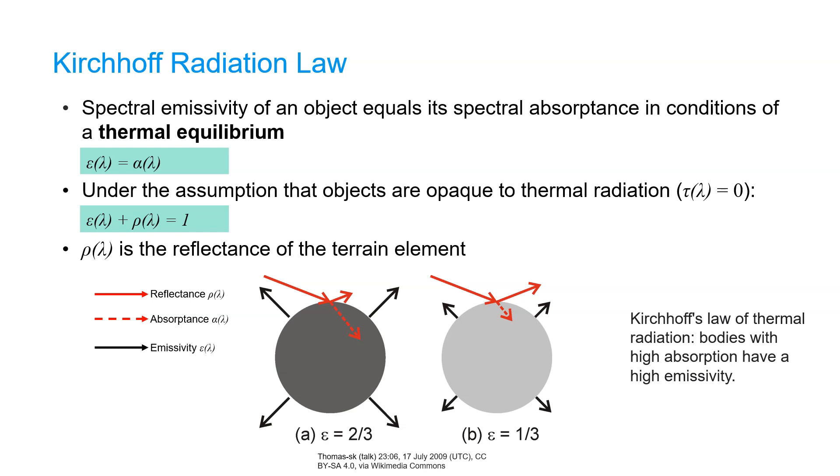In the equation, rho is the reflectance of the object. Now if we look at the figure, we can see in figure A that the emissivity is high compared to B, and in that condition we see also that the absorptance is high, because according to Kirchhoff's radiation law, emissivity equals the absorptance.